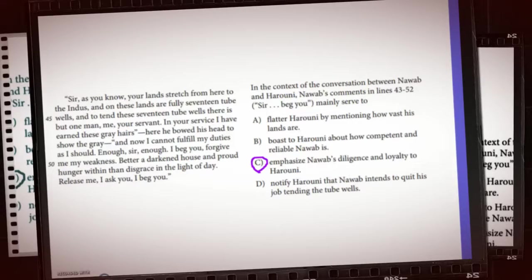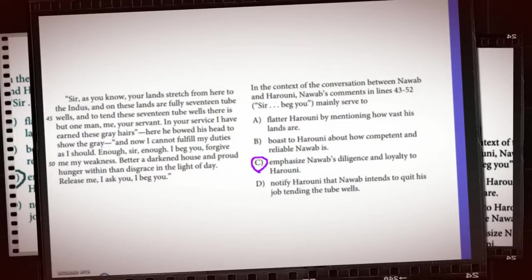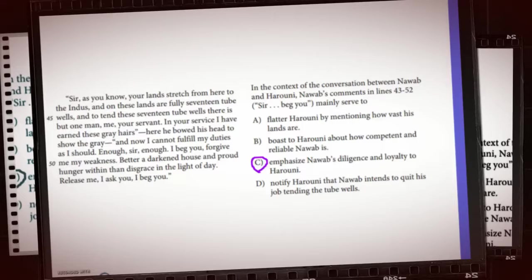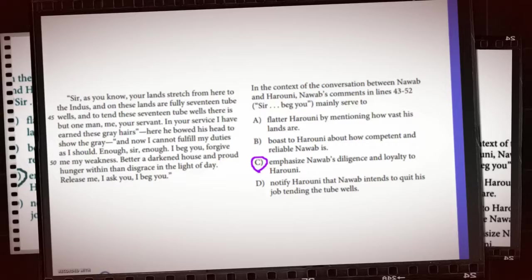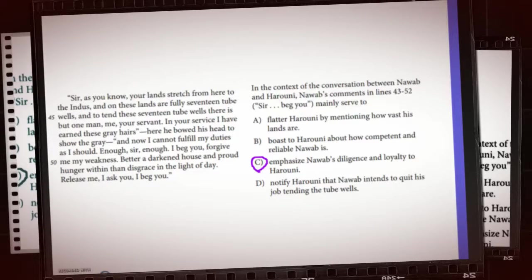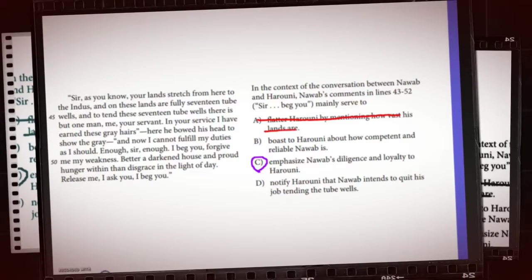Answer choice A is not the correct answer because even though initially in lines 43 through 52 they highlight the vastness of Harouni's lands, these lines primarily focus on Nawab and his dedication and service to Harouni.